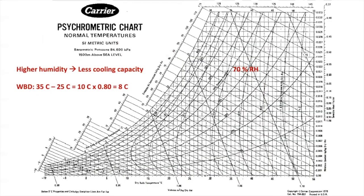Usually the higher the humidity, the less cooling capacity. For example, using the same dry bulb temperature but now with a relative humidity of 70%, using the same calculations, we can only reduce 8 degrees Celsius. This shows us two different things: cooling systems work better in arid zones, and if thinking of controlling temperature in warm and humid areas, you will have to make extra effort on keeping good ventilation and the use of exhaust fans to avoid overheating of the greenhouse.